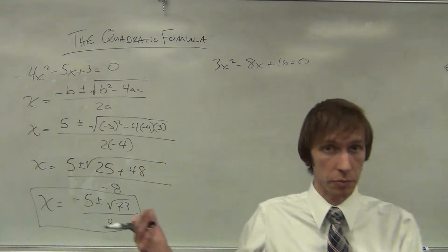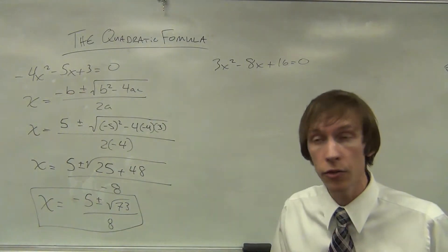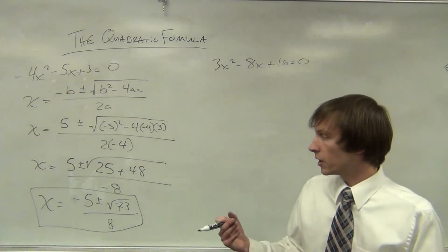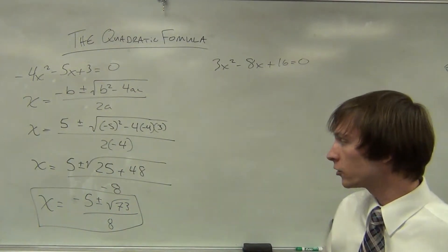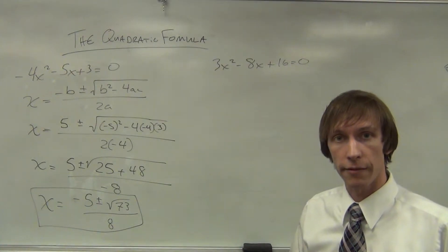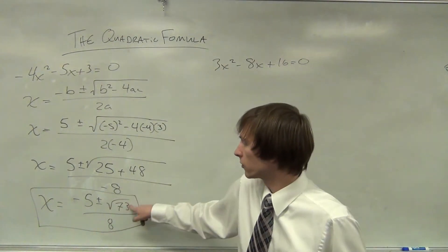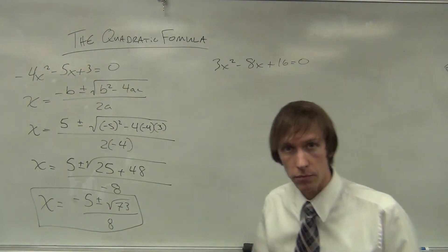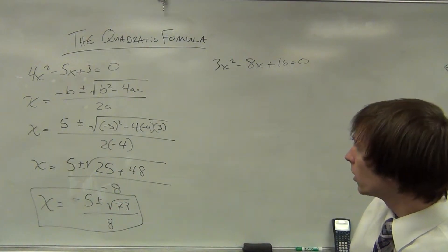73 cannot be simplified any better than it already is. And so we have -5 ± √73 divided by 8 for our two solutions, the positive solution and the negative solution.